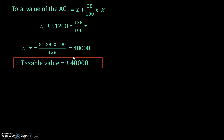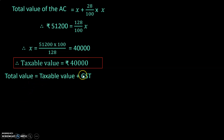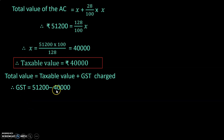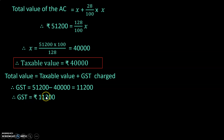The next quantity to find is the amount of GST. Total value equals taxable value plus GST charged. Therefore, GST charged equals ₹51,200 minus ₹40,000, which equals ₹11,200. Therefore, GST charged equals ₹11,200.